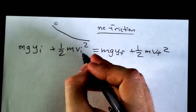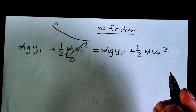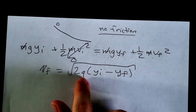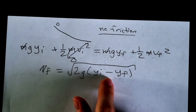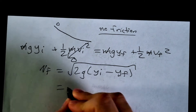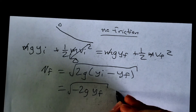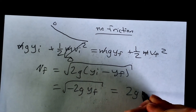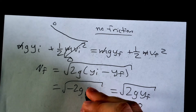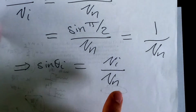We can simplify the energy conservation equation by assuming the object starts at rest, canceling the mass terms, and solving for v_F. The result is v_F = √(2g(Y_i − Y_F)). Setting Y_i = 0 and requiring Y_F > 0, this simplifies to v_F = √(2gY). We can then plug this into our Snell's law equation.